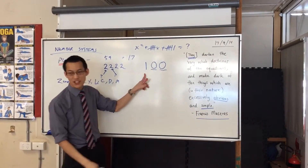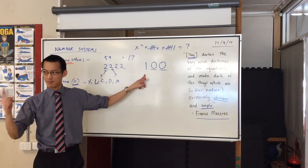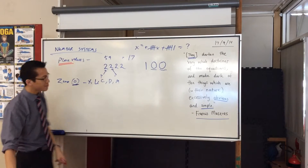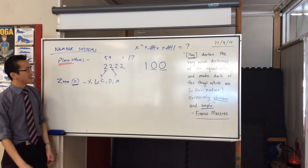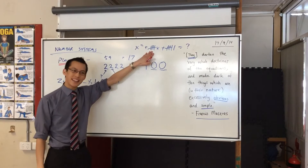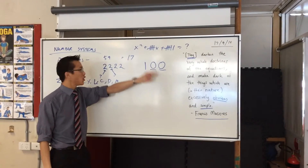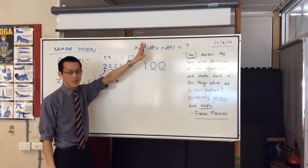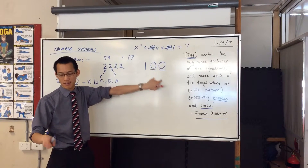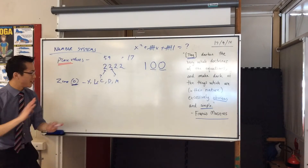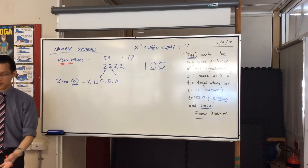Zero was invented because the one just can't hang out on its own, because otherwise it just means one — a unit. But it's weird because how can you have a number for nothing? It started with tallying and counting — if you don't have anything, you don't tally anything. But when you introduce place values, you must have zero. It was to get numbers like 100 in place value form.